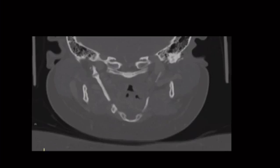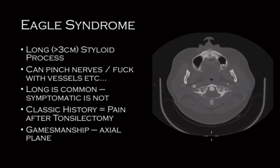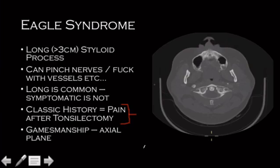This is your elongated styloid process, and it can be associated with some discomfort — classically described as occurring after a tonsillectomy, because normal anatomy has shifted after the tonsil is taken out. It can push on nerves and vessels. The thing is a lot of people have elongated styloid processes, so you look foolish calling Eagle syndrome every time you see one. But in a setting where somebody has symptoms and they're looking for a cause, if you see that, it can be the cause. The tricky gamesmanship: they may show it on an axial plane where it's less obvious.